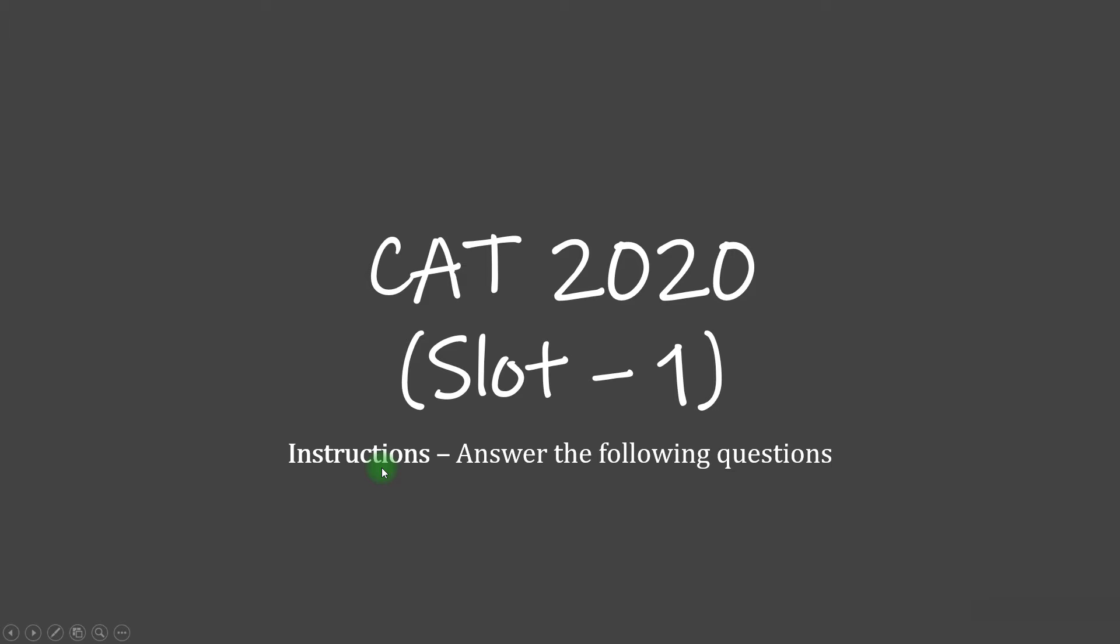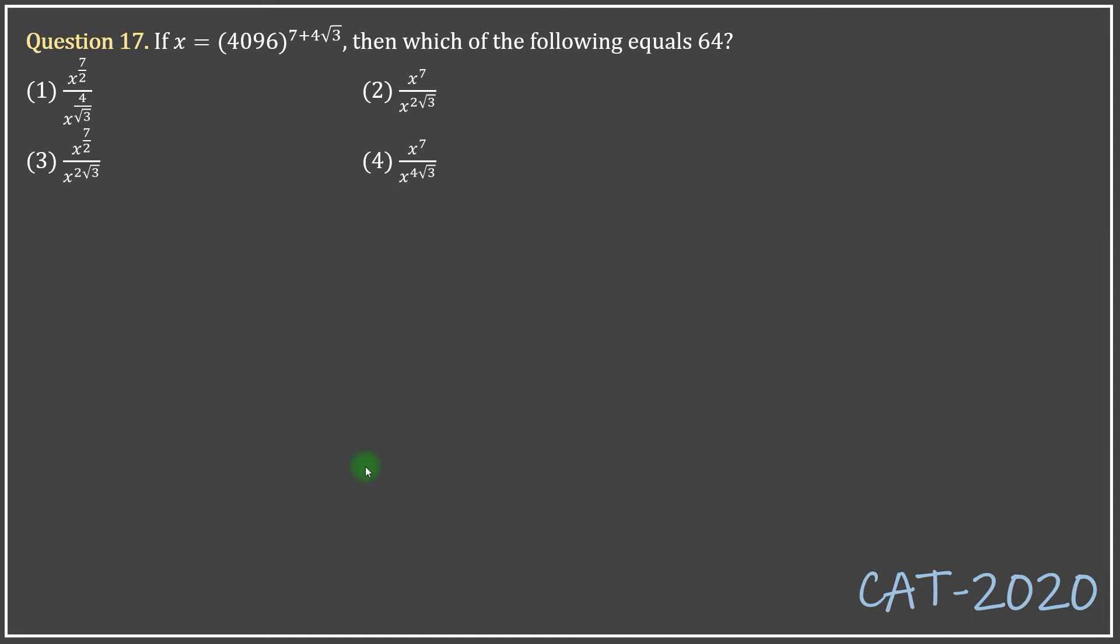So let's get on with the question from CAT 2020 Slot 1. If x equals 4096 raised to the power 7 plus 4 root 3, which of the following equals 64?